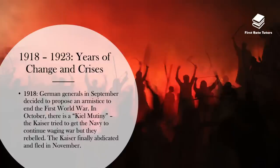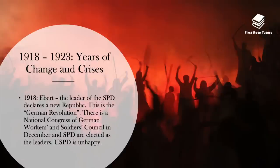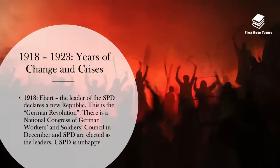The Kaiser finally abdicated and fled in November. This therefore meant that Germany went from being a monarchy to, in 1918, the Kaiser fleeing and Germany becoming a republic. Ebert, who was the leader of the SPD, which is the Social Democratic Party, declared a new republic. This was essentially the German Revolution. Then there was a National Congress of German Workers and Soldiers Council in December, and the SPD were officially elected as its leaders.